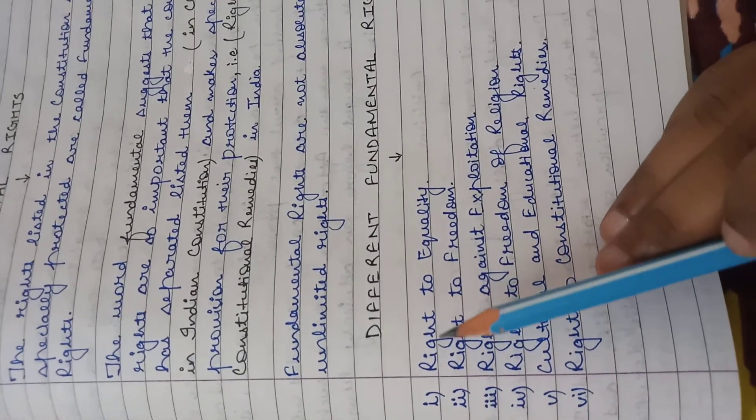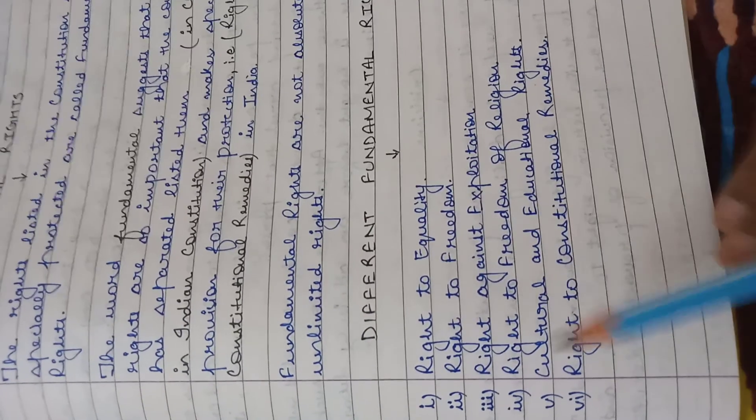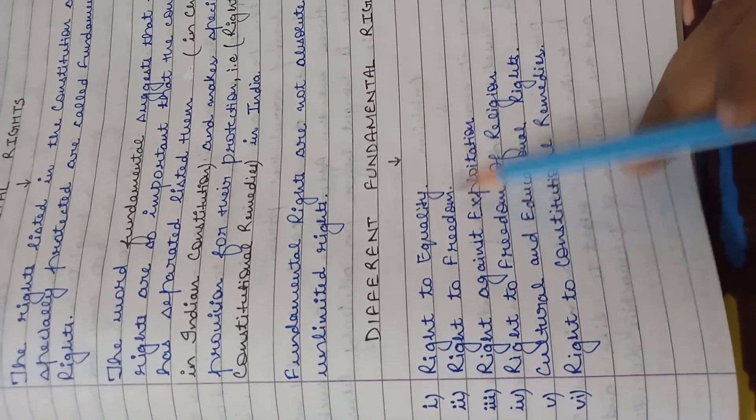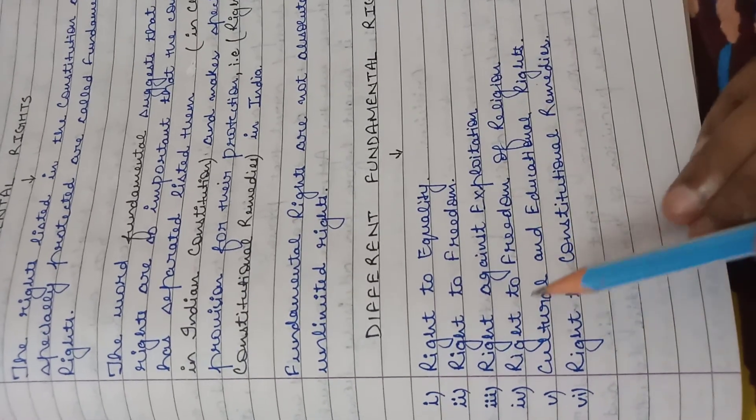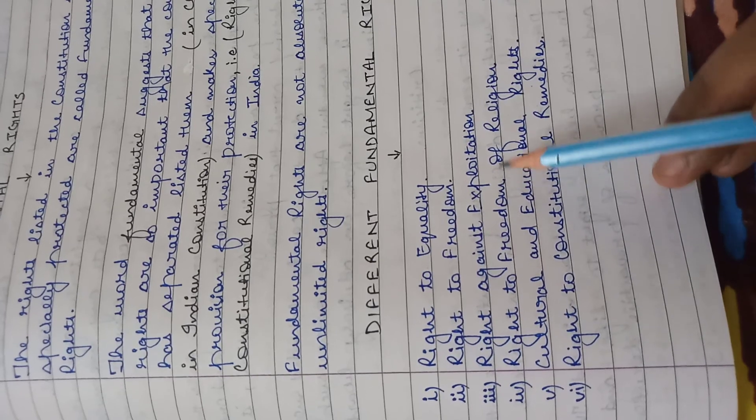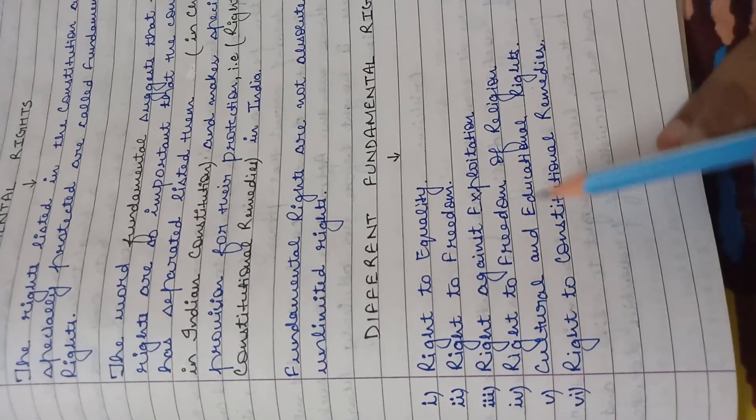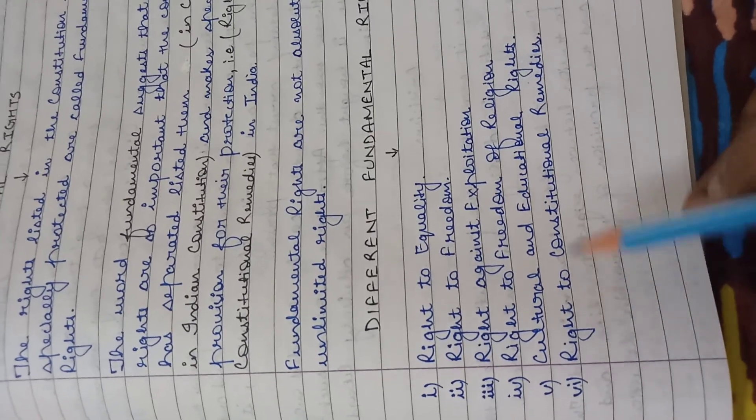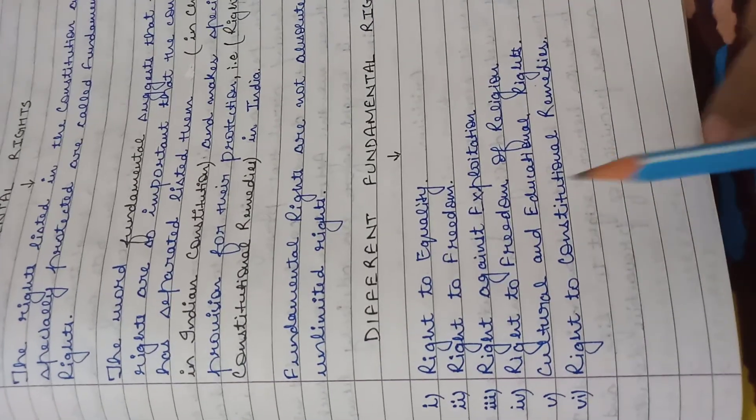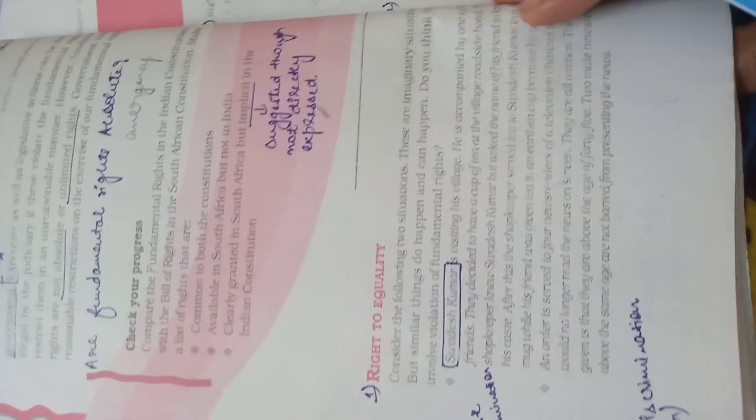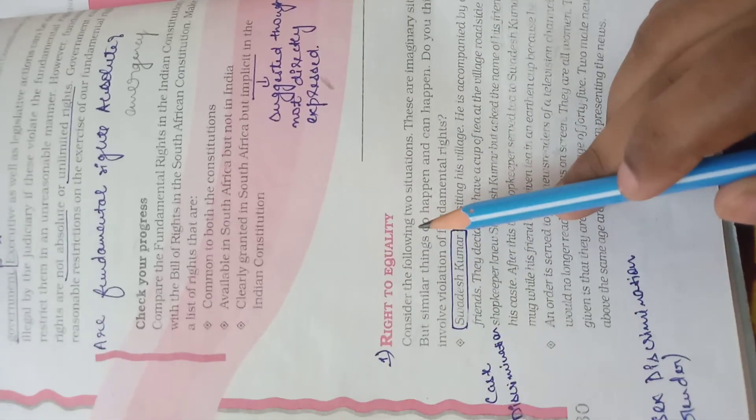Starting with right to equality, then we have right to freedom. Freedom and liberty are one and the same thing. Right against exploitation, right to freedom of religion, cultural and educational rights, and finally the sixth right is right to constitutional remedies.